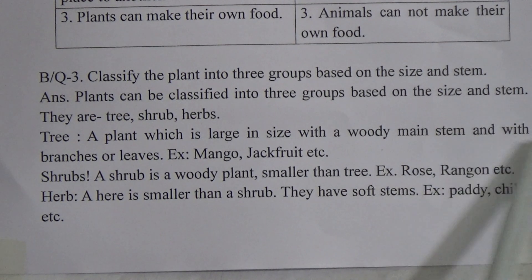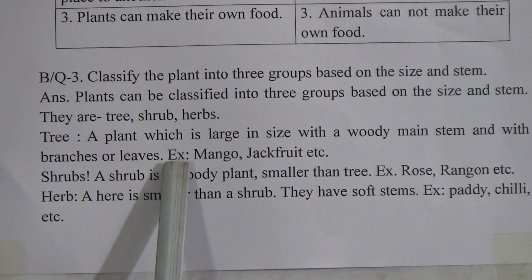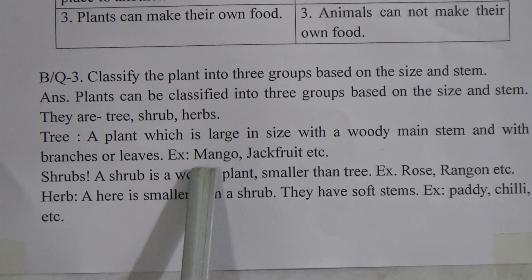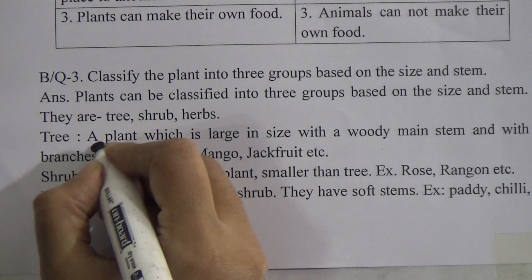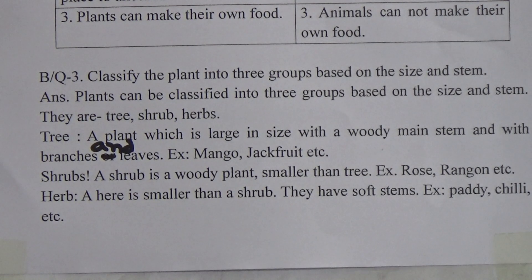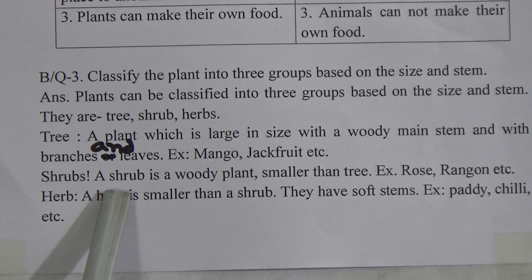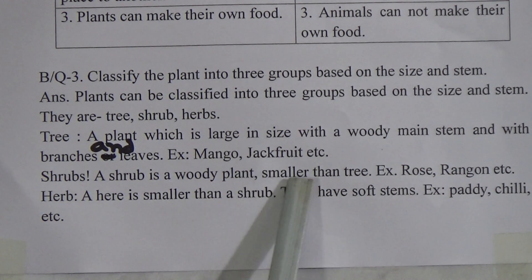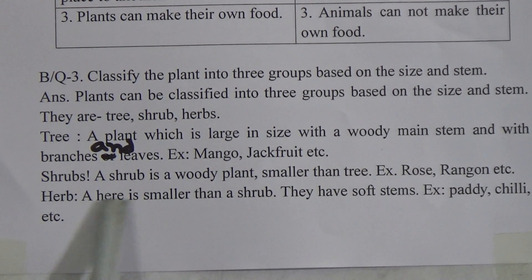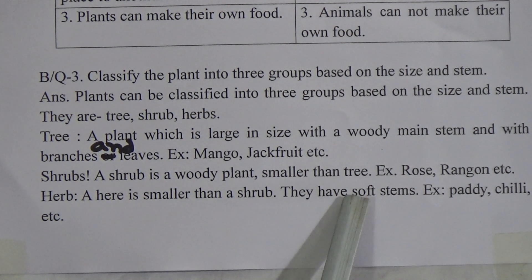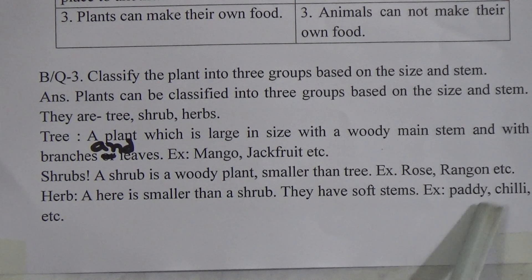A tree is a plant which is large in size with a woody main stem, with branches and leaves. Examples: mango, jackfruit, etc. A shrub is a woody plant smaller than a tree. Examples: rose, ronjon, etc. A herb is smaller than a shrub and has soft stems. Examples: paddy, chili, etc.